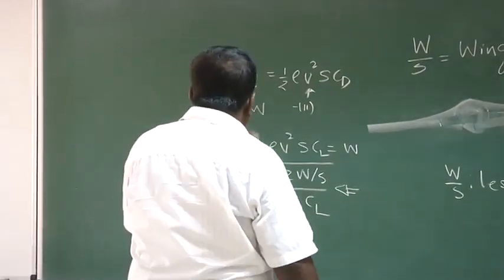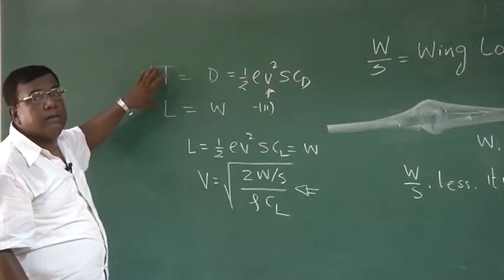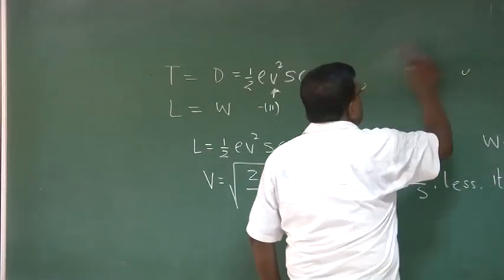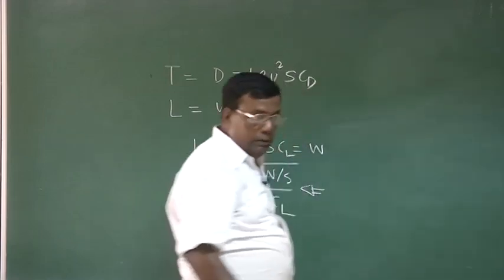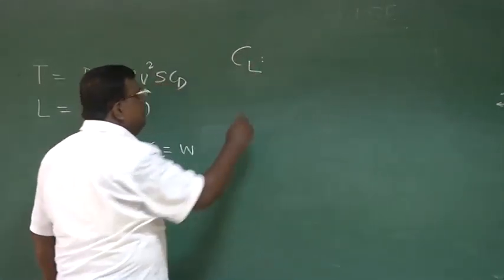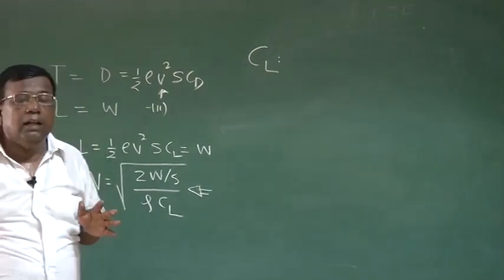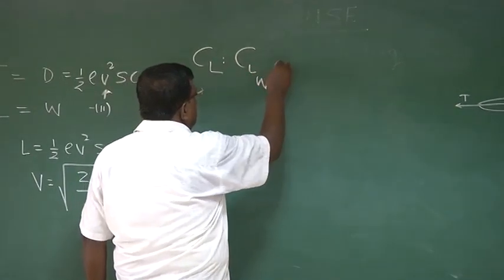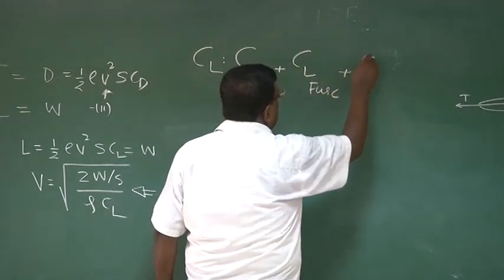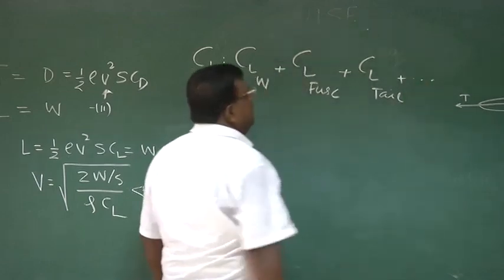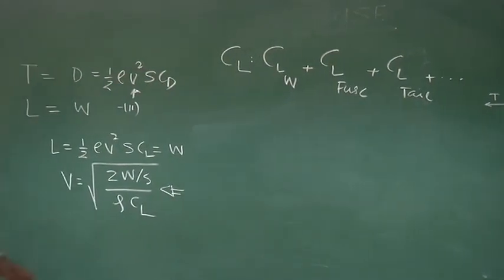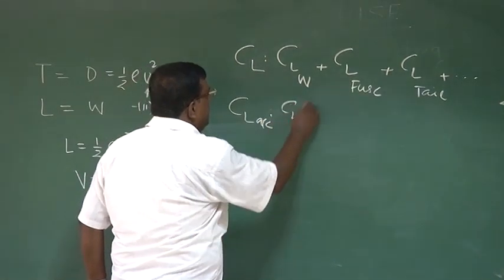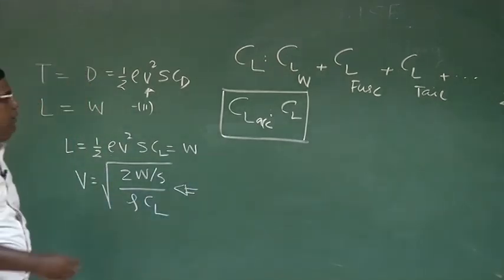This is a very, very important parameter and we must always try to see these two equations together. Now, there is another important term in this equation: CL. What is this CL? This is not just CL of the wing — it is CL of the whole airplane. So I must be very clear in my mind: this is CL because of wing, CL because of fuselage, CL because of tail, and if any other components are there — a canard or any other surfaces.